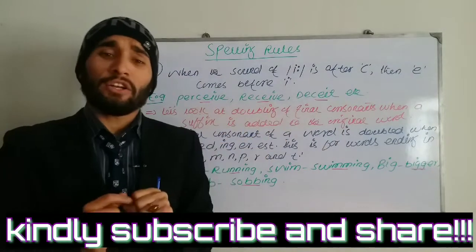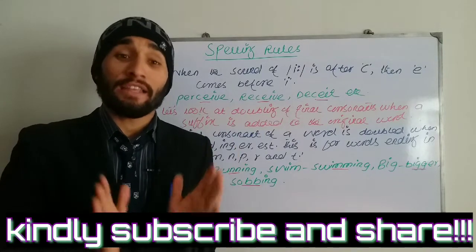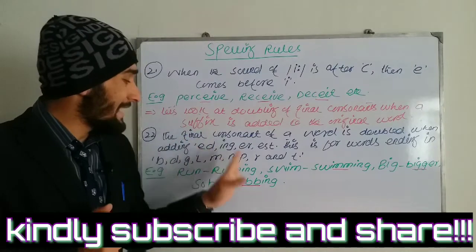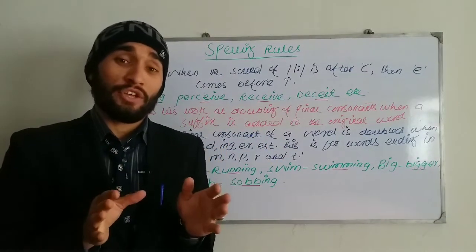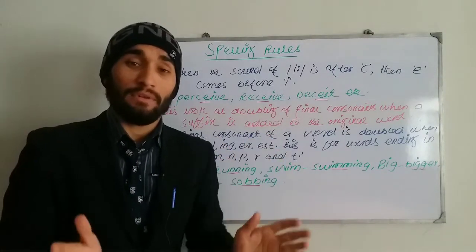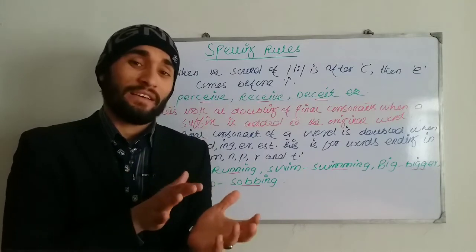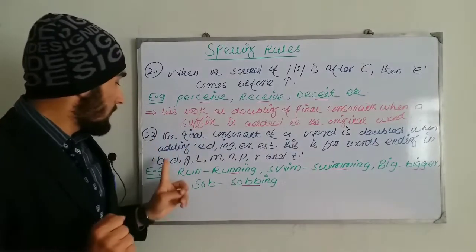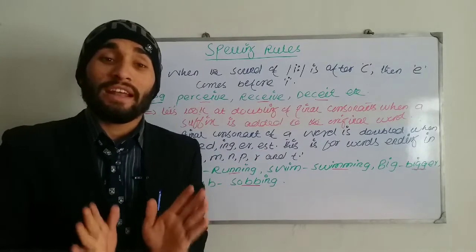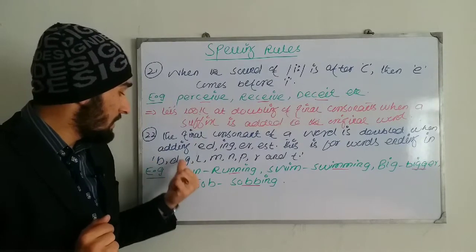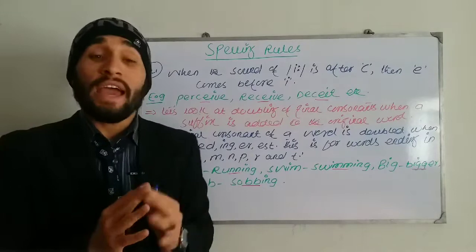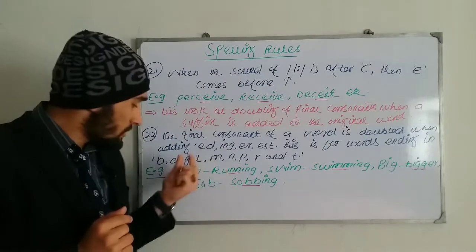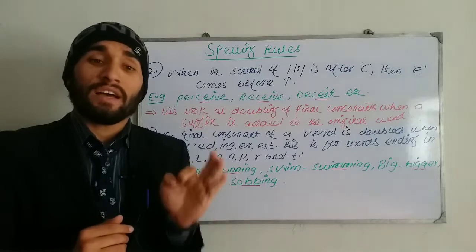Rule twenty-two: the final consonant of a word is doubled when adding suffixes such as -ED, -ING, -ER, or -ESC. We can double final consonants when adding these suffixes, and this applies to words ending in consonants such as B, D, G, L, M, N, P, R, and T. Let's have a look at examples. Take the word 'run' — this word ends with the consonant N.